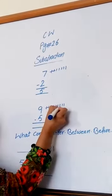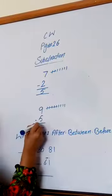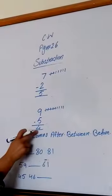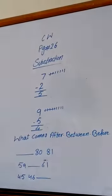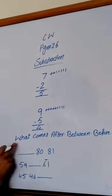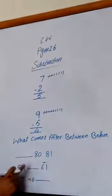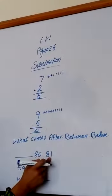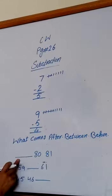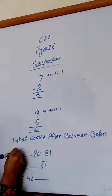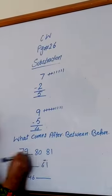Counting: 1, 2, 3, 4, and 5. How many are left? 1, 2, 3, 4. Nine minus 5 equals 4.